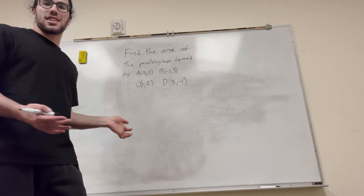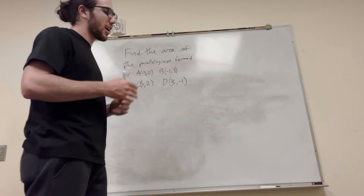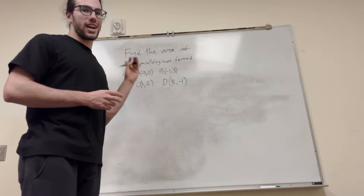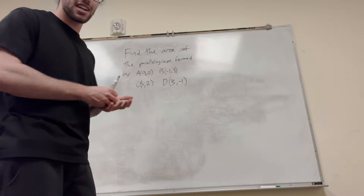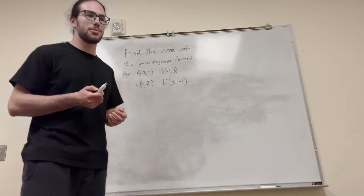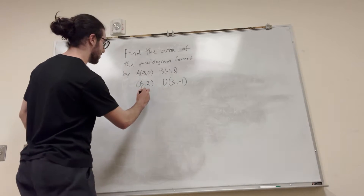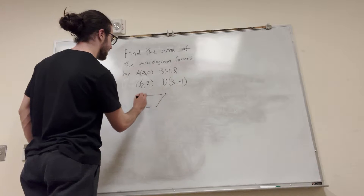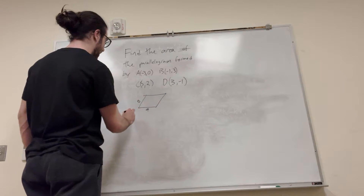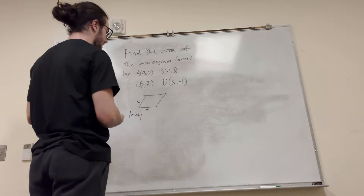We don't actually need to visualize this at all. We just need to know some simple things. When you cross two vectors, you're going to get a third vector. But if you take the magnitude of the cross product, what it gives you is basically the area formed in the parallelogram form. Say you have a parallelogram with vectors A and B — the magnitude of A cross B is going to give you the area.